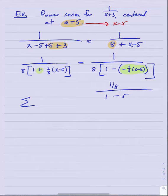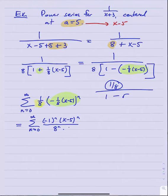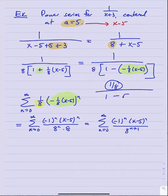Now I have one eighth over one minus r, where r is negative one eighth times x minus five. The power series is n equals zero to infinity one eighth times negative one eighth times x minus five to the n. Breaking this apart into negative one to the n, x minus five to the n, and eight to the n in the denominator, plus the factor of eight already there, gives n equals zero to infinity negative one to the n times x minus five to the n over eight to the n plus one.